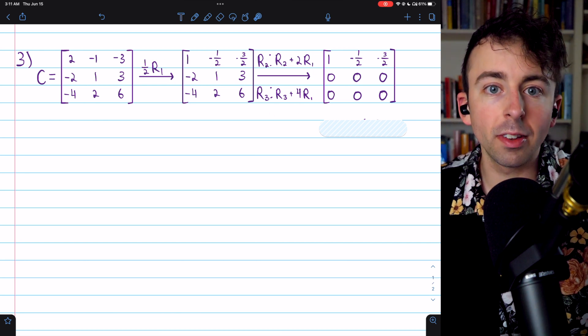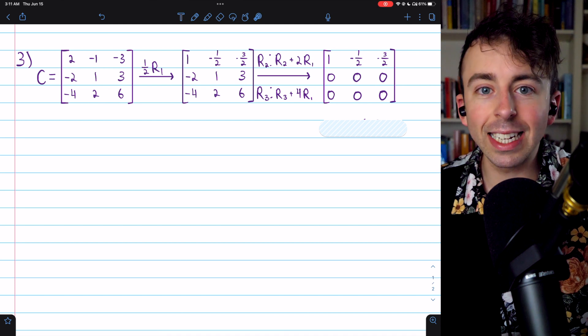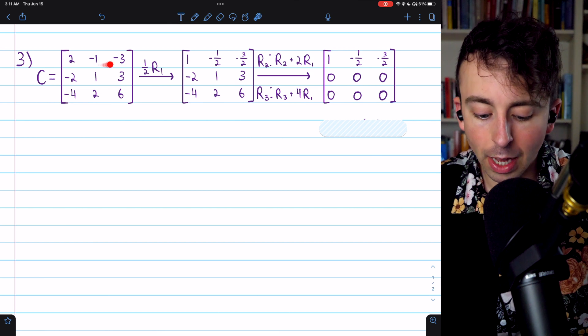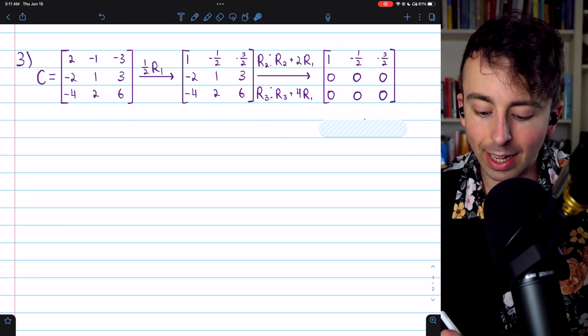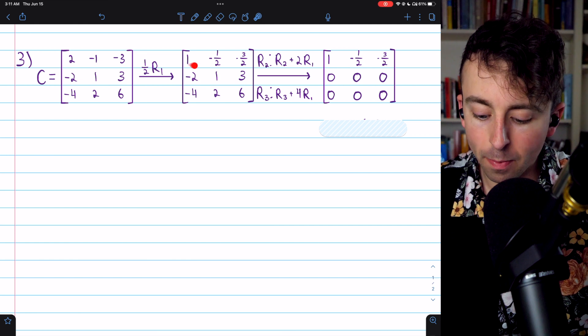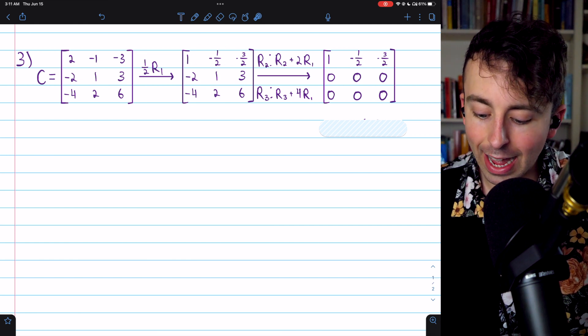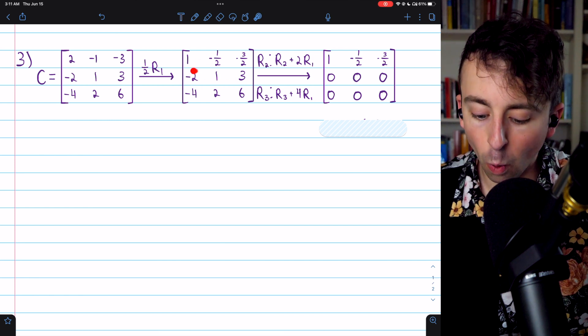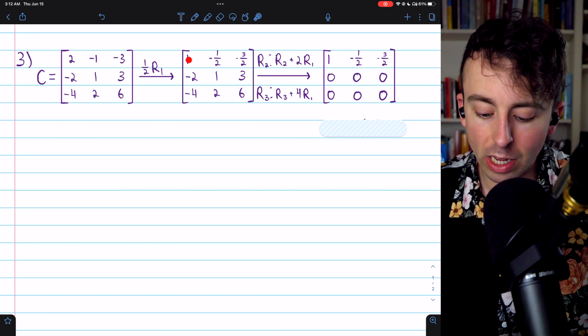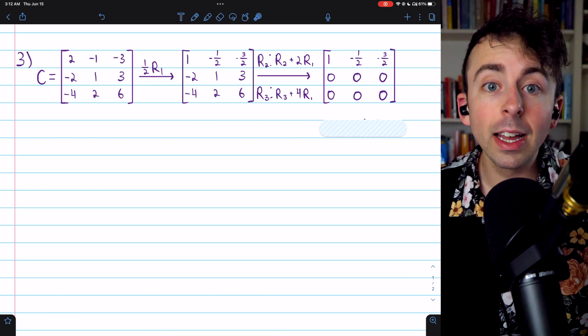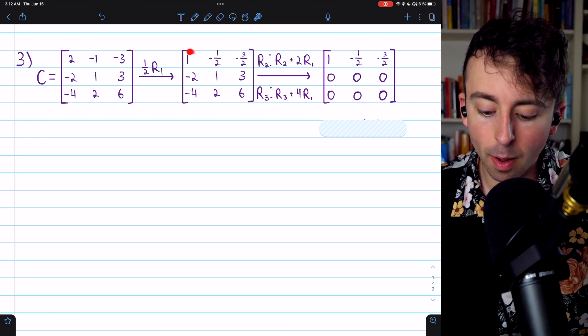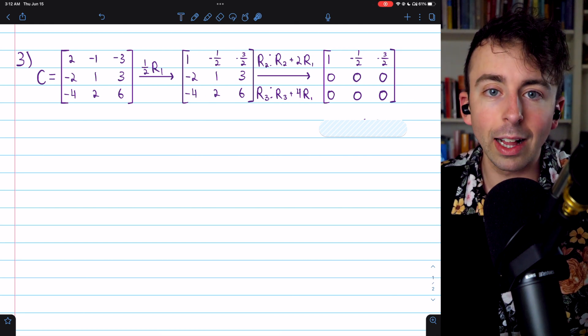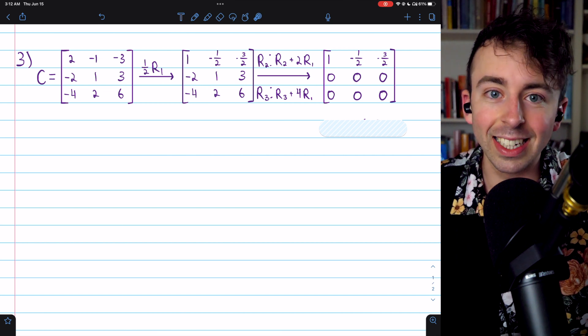Row echelon form requires that the non-zero rows have leading ones with zeros below them. So the first thing we'll do is multiply row one by one half. That way we get a leading one. So row one becomes this. Then we can add two copies of row one to row two in order to turn this entry below the one to a zero. Similarly, we'll add four copies of row one to row three to turn this entry to a zero as well because we want zeros below the leading one.